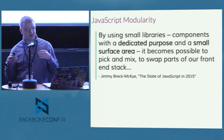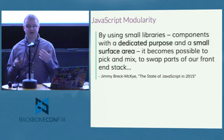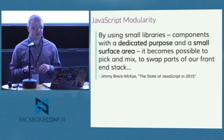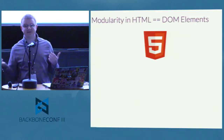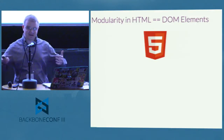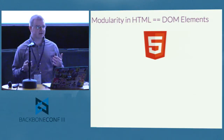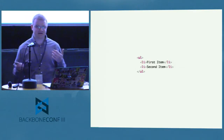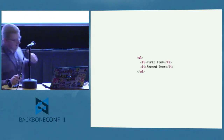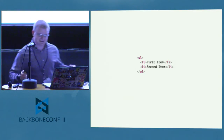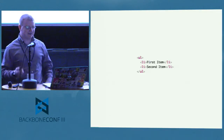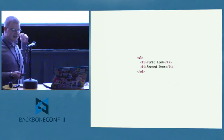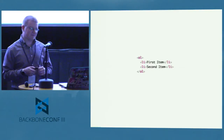Thinking about how we use modularity in the web — whether on the back end or front end — on the client side, one of those ways is simply HTML. We've had DOM elements for a long time and they're actually really modular. For example, let's say we have an unordered list. It's really easy to go ahead and convert that to an ordered list — you just change one character. I don't need to worry about breaking APIs or any big changes.